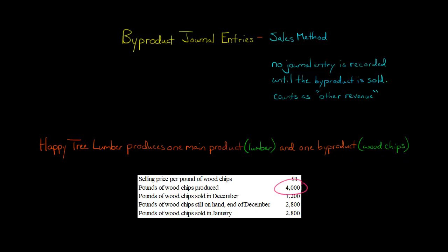They end up with 4,000 pounds of wood chips, which they're going to sell for a dollar a pound, and they happen to sell 1,200 pounds in the current period, which is December. December 31st is the fiscal year end. And in the next period, January, they sell the remaining 2,800 pounds of wood chips. So how would we account for this?